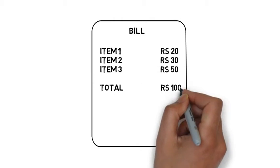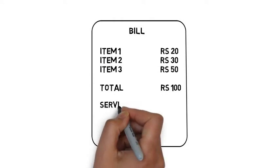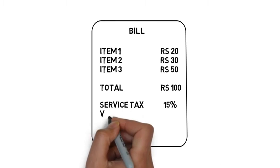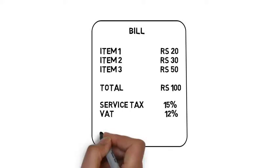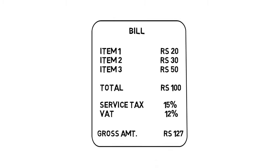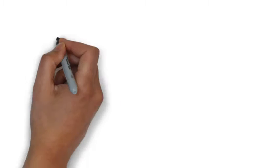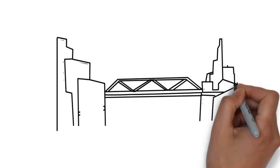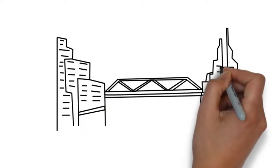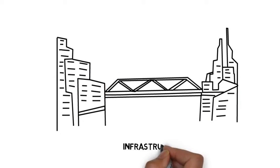For example, a service tax is imposed on the amount of services provided, while a VAT is charged on the consumption of goods and services. These taxes are utilized by the government to facilitate their functioning and to fund the public infrastructure.